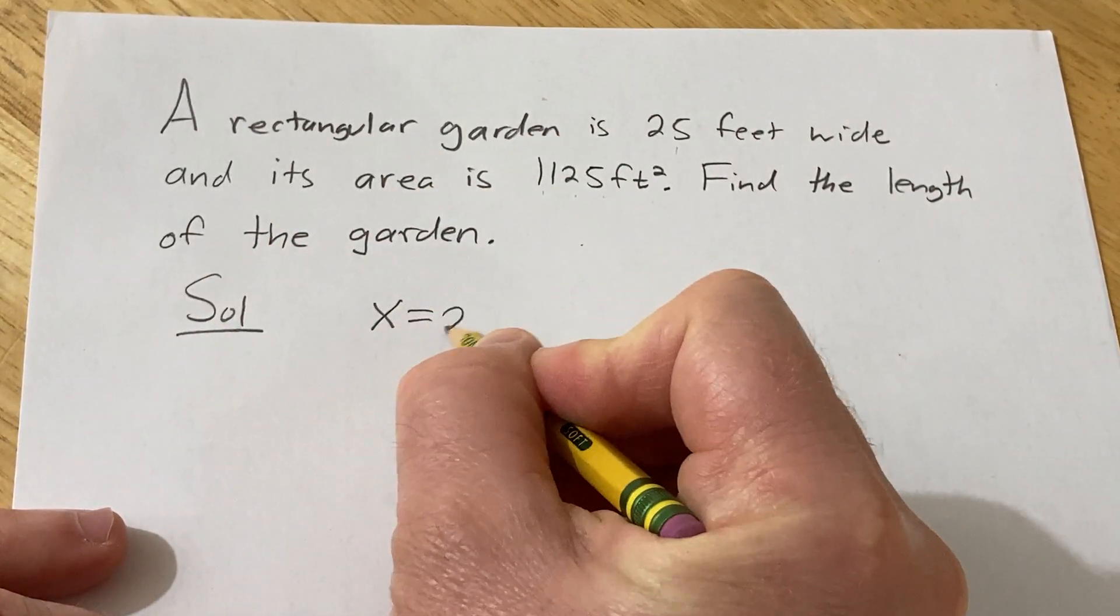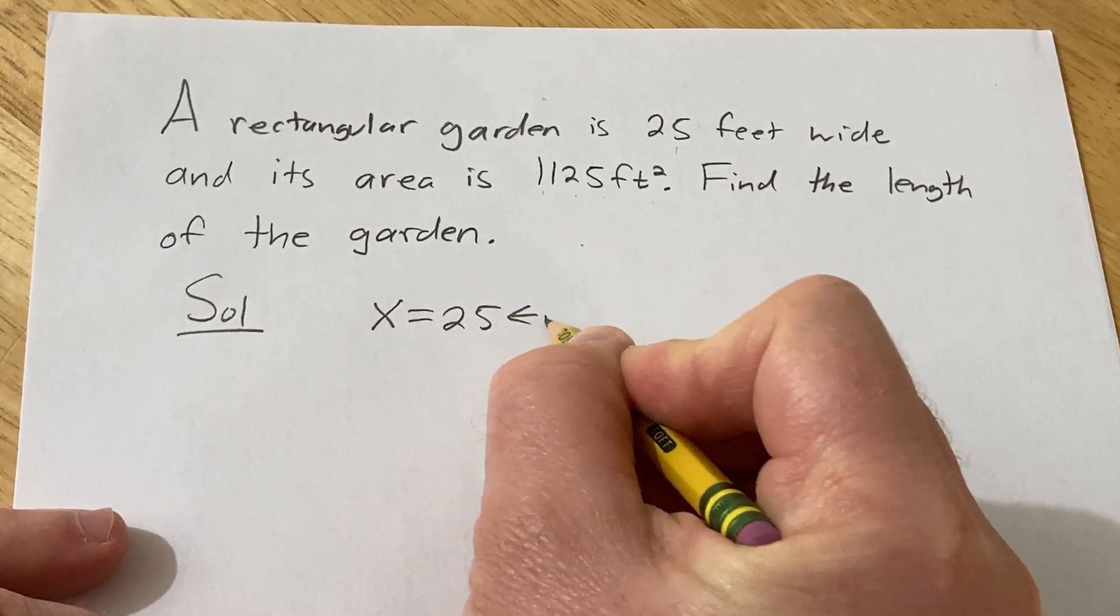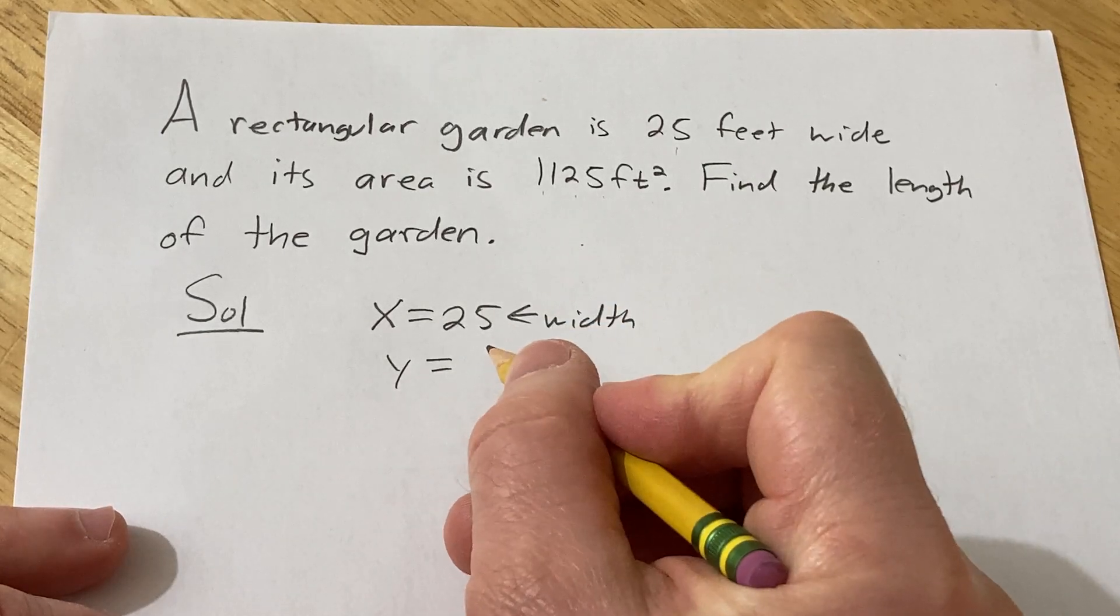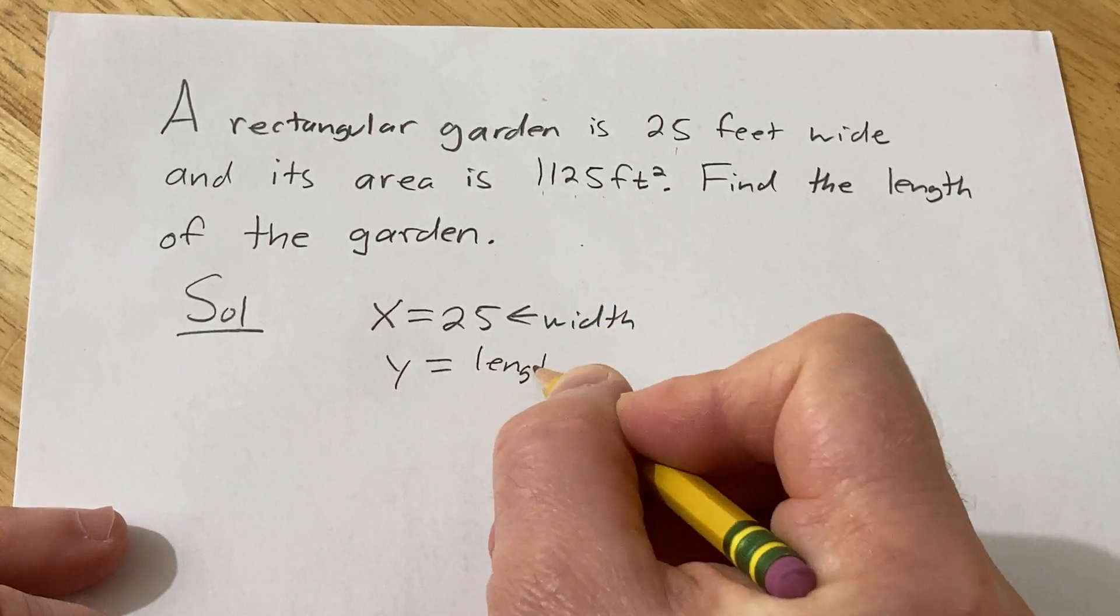So we have x is equal to 25. This is the width. Let's call it x. And we have y that will be the length. And we need to figure this out.